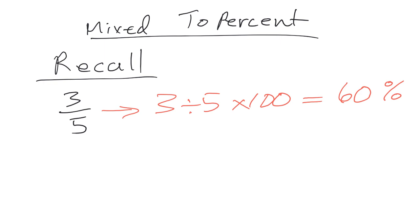Now, when we have a mixed fraction, let's say we have 2 and 1 half, and we want to turn that into a percent, here's what we do. The first thing that we have to do is change our mixed fraction into an improper fraction. So let's do that right away.